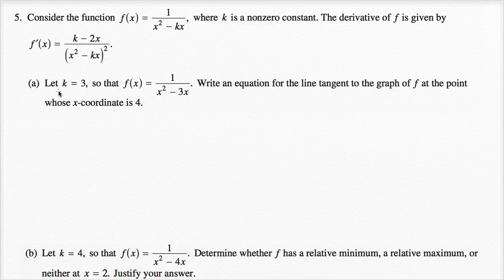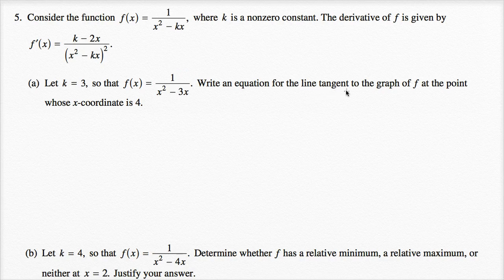Now part A: let k equal three, so that f of x is equal to one over x squared minus three x. Write an equation for the line tangent to the graph of f at the point whose x coordinate is four.